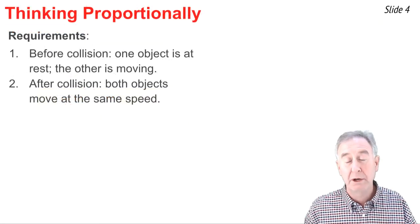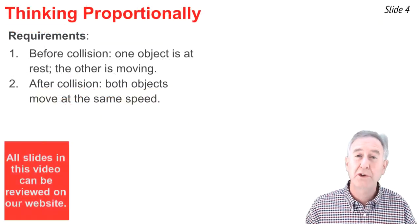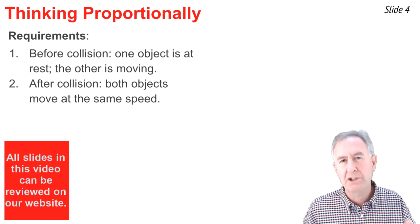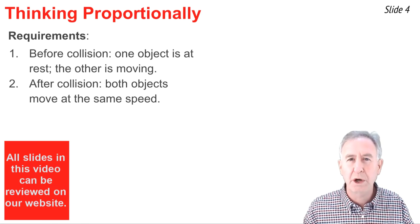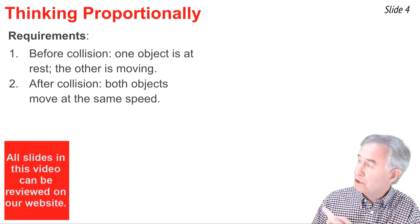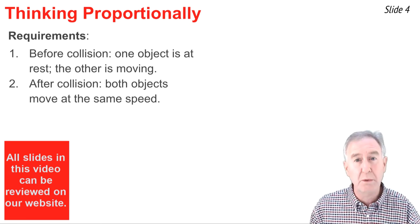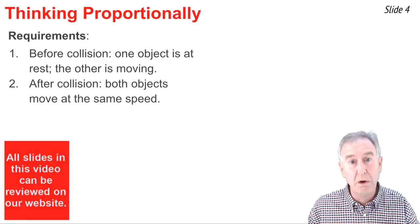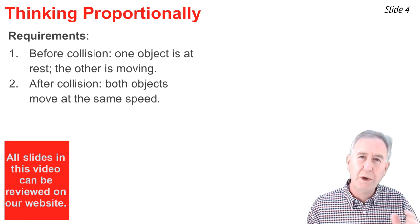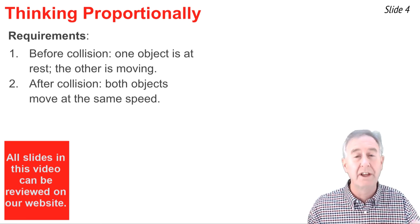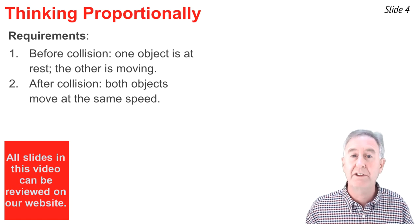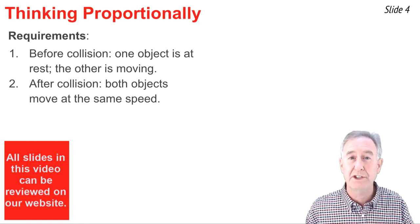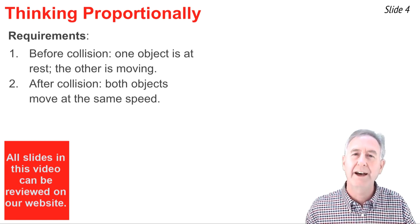In this video, we're going to learn a new trick for thinking about collisions — we'll think proportionally, or in terms of ratios. This trick will work whenever a collision meets two requirements: before the collision, only one object is moving and the other is at rest; and after the collision, both objects move together at the same speed — a collision we call a hit-and-stick collision.